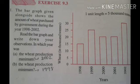Second question: in which year was wheat production minimum — least? Look at the graph, you can see the least is in 1998. Around 15,000 tons — or as written in the bracket, 9,000 tons. So this is how we have to read the graph.